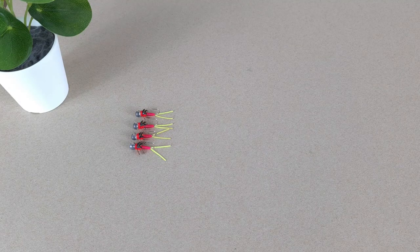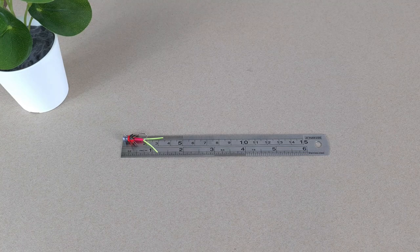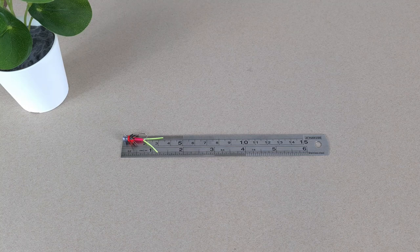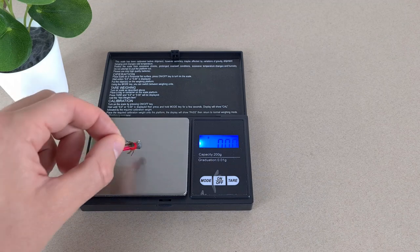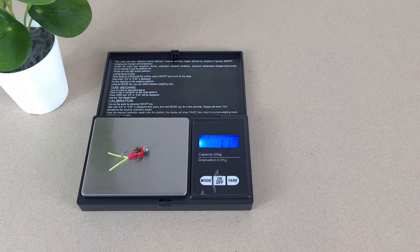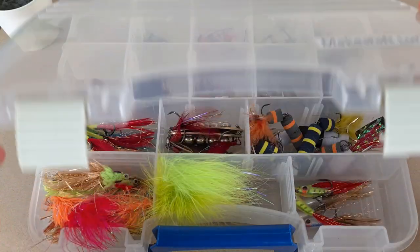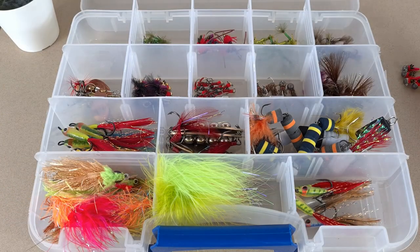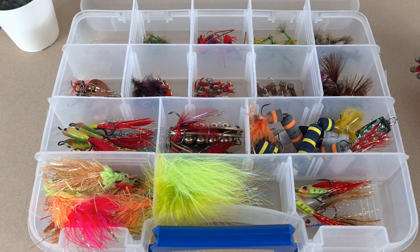Jigs are ready, let's check size and weight. The body is around 2cm and together with the tail it's 3.5cm. It is 1.1 grams. Let's put them in the box and take them out fishing.